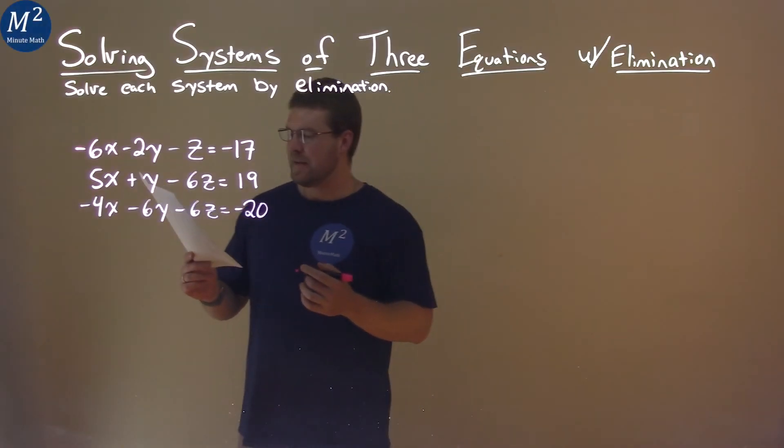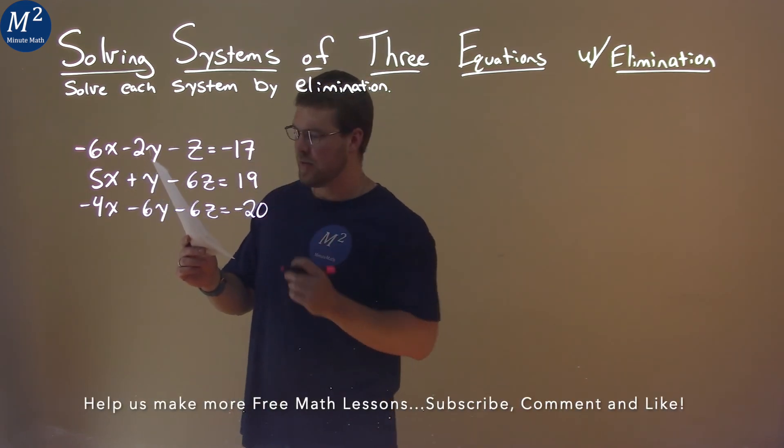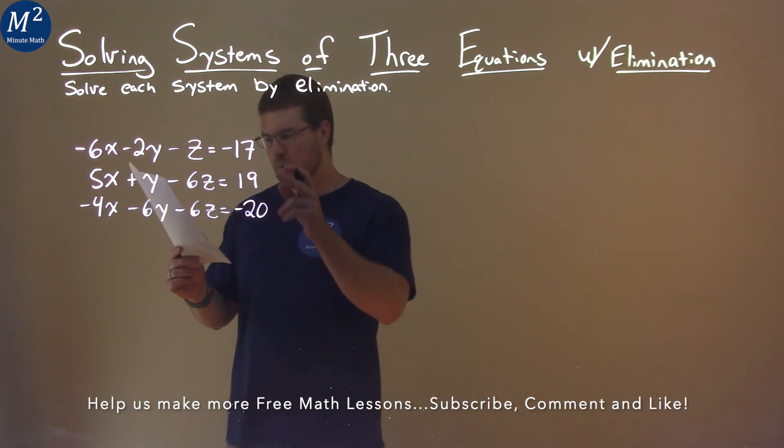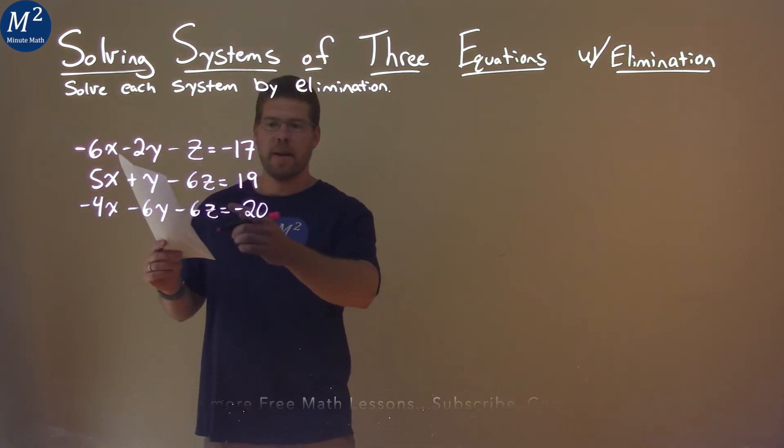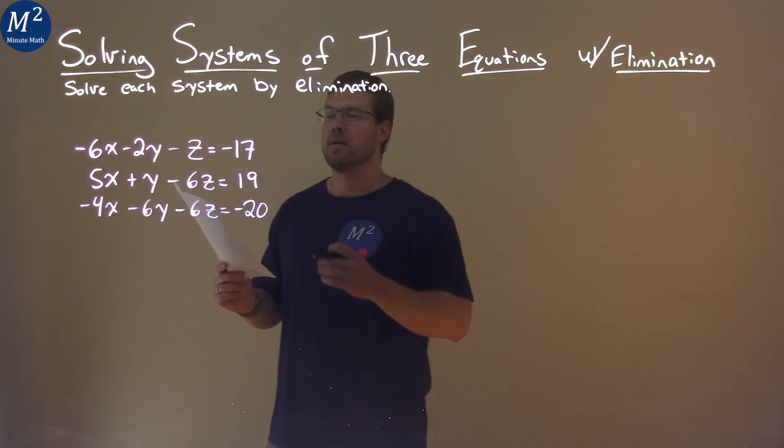We're given this problem right here: negative 6x minus 2y minus z equals negative 17, 5x plus y minus 6z equals 19, negative 4x minus 6y minus 6z equals negative 20, and we want to solve this by elimination.